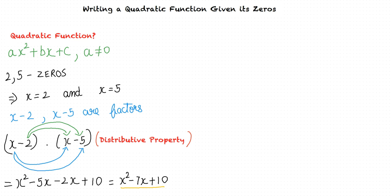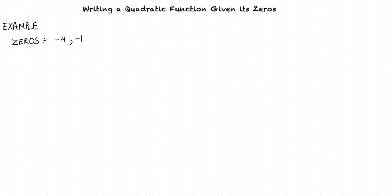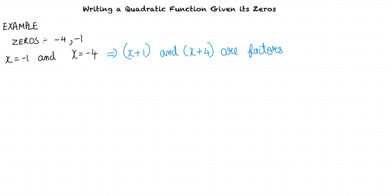Can we do another example? Let us say we are required to determine the quadratic function whose zeros are negative 4 and negative 1. We know that x equals negative 1 and x equals negative 4 are the zeros, which means that x plus 1 and x plus 4 are the factors. The quadratic function can be written as x plus 1 times x plus 4.